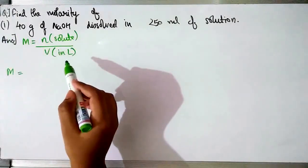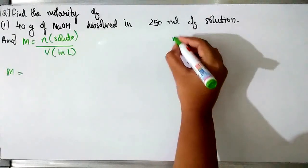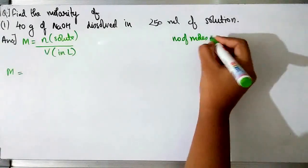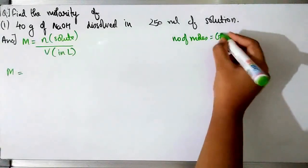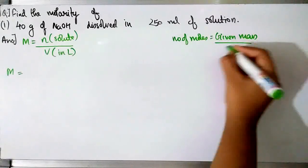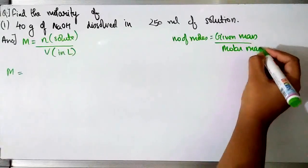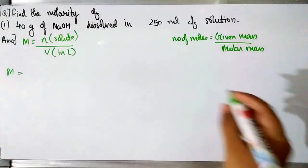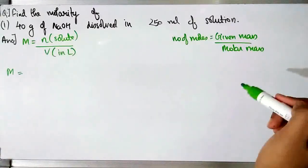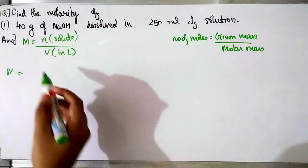They have given us the mass, so we are going to calculate the number of moles. There is a formula: number of moles equals the given mass upon the molar mass or molecular mass. So we are going to use this formula to find the number of moles.